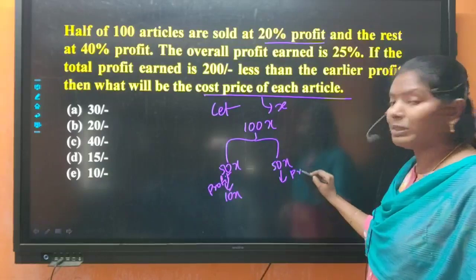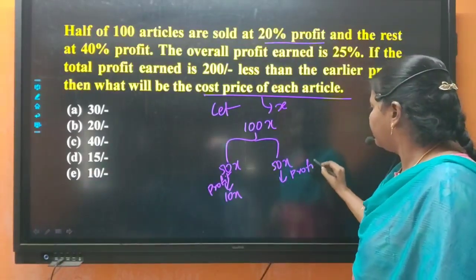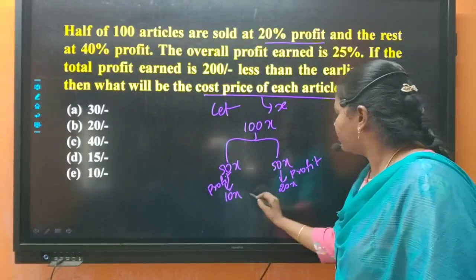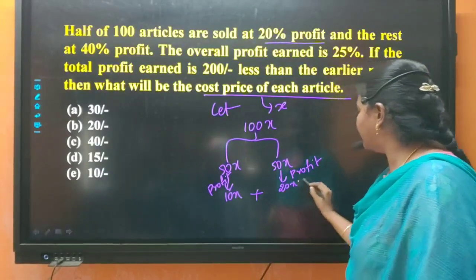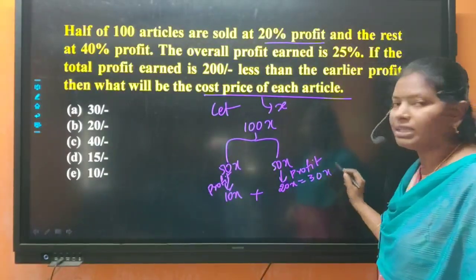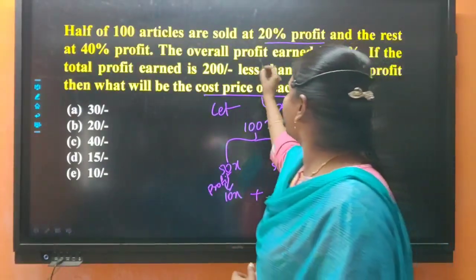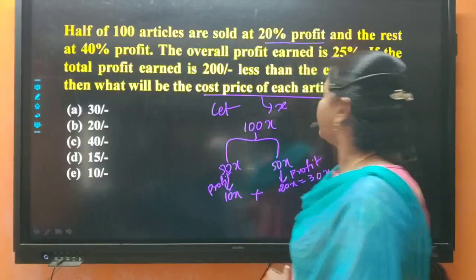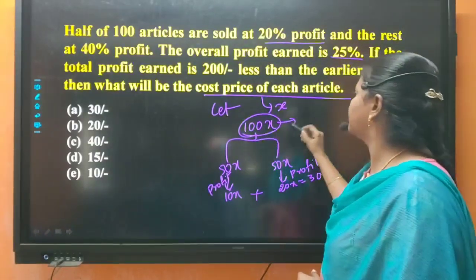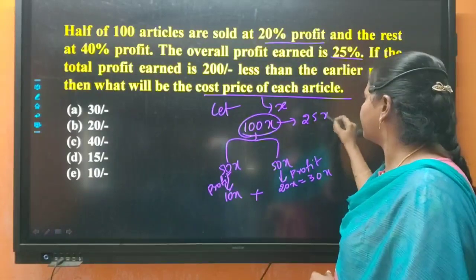The remaining half is sold at 40% profit, giving a profit of 20x. So the total profit from both halves is 30x. But the overall profit is 25%, which on 100x gives 25x.